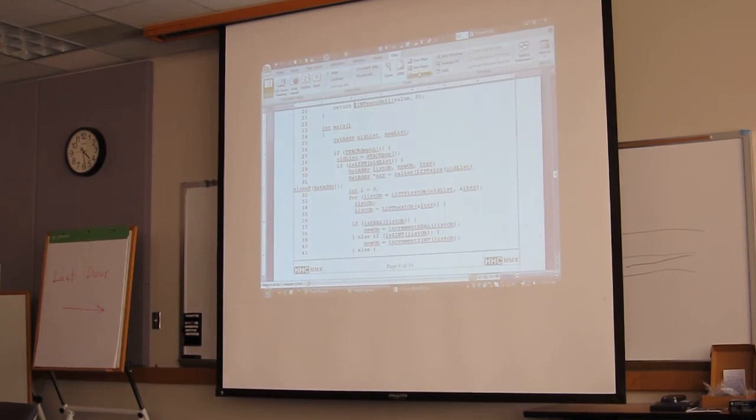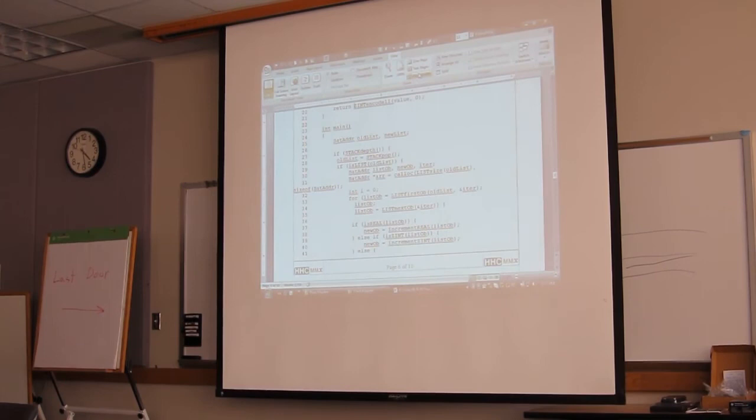And then we'll get to the meat of handling the list down here. So again, we have old list and new list. At line 27, if there's a stacked up, we're going to pop the list off, check to make sure it is a list on line 29. Then we start getting into some of the guts.